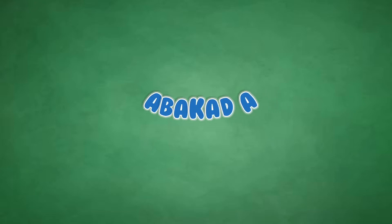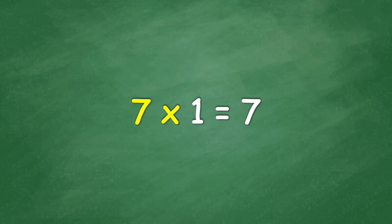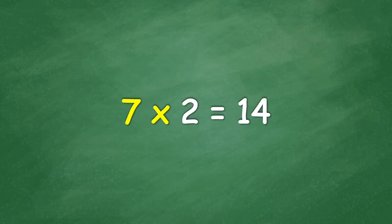Multiplication table of 7. 7 times 1 equals 7. 7 times 2 equals 14. 7 times 3 equals 21.